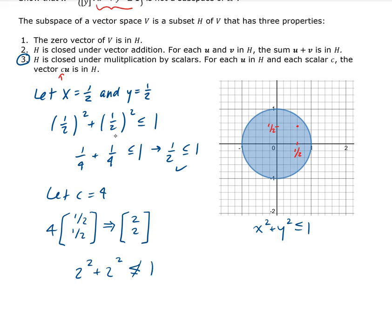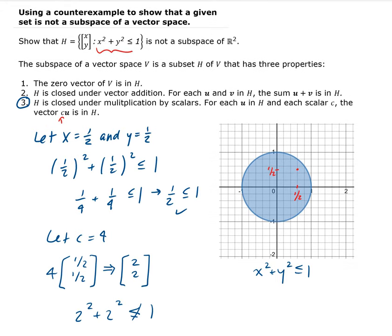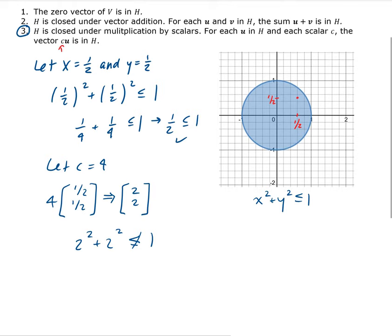Therefore, this is a counterexample to property three. So we found a point that lies inside this unit circle, that's inside H. And when we multiply it by scalar, in this case four, it doesn't satisfy the restriction for this space. So it lies outside. And you can even see that visually.